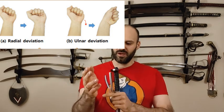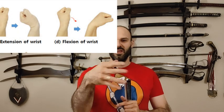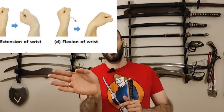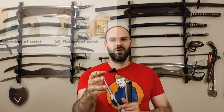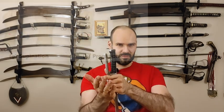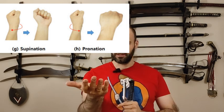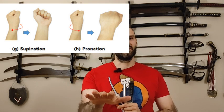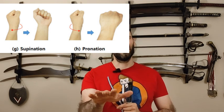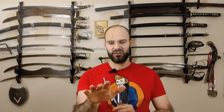Next we have extension and flexion of the wrist — that is very important: moving outside and moving inside. There is also rotation. So rotation — the outside, when we are thinking thumb, it rotates to the outside — that is supination. And when we are rotating inside, it's pronation.